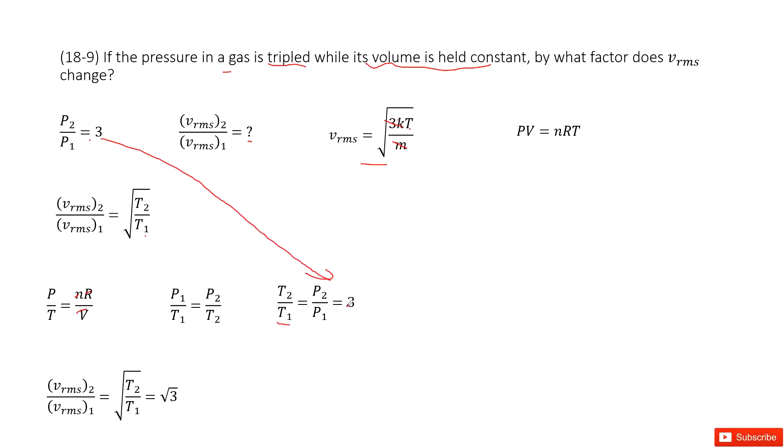And then we can input the ratio T2 over T1 equals 3, put it inside, and we can get the ratio for the speed is just square root of 3.